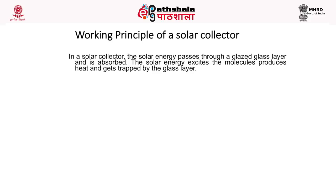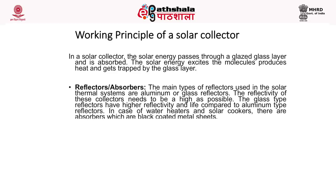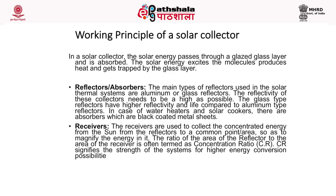In a solar collector, the solar energy passes through a glazed glass layer and is absorbed. The solar energy excites the molecules, produces heat, and gets trapped by the glass layer. The main types of reflectors used in solar thermal systems are aluminum or glass reflectors, with glass type reflectors having higher reflectivity and longer life. In water heaters and solar cookers, absorbers are black-coated metal sheets. Receivers collect the concentrated energy from the sun at a common point, and the ratio of the area of the reflector to the area of the receiver is termed the concentration ratio, which signifies the strength of the system for higher energy conversion.